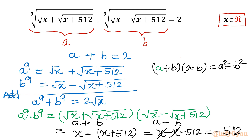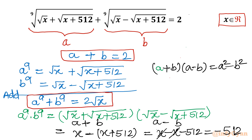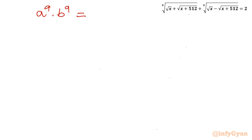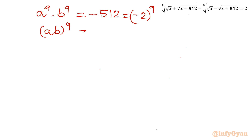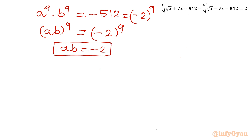So our important system of equations is: a plus b equals 2; a⁹ plus b⁹ equals 2√x; and a⁹ times b⁹ equals minus 512. Since minus 512 equals minus 2⁹ (because 2¹⁰ is 1024, half of that is 512), the left side becomes (ab)⁹ = (−2)⁹, so ab equals minus 2.